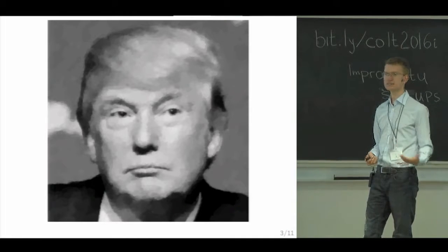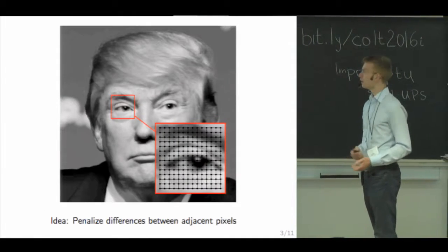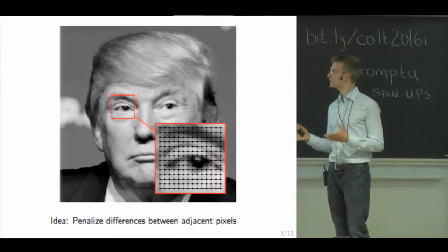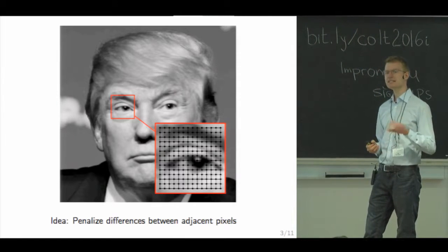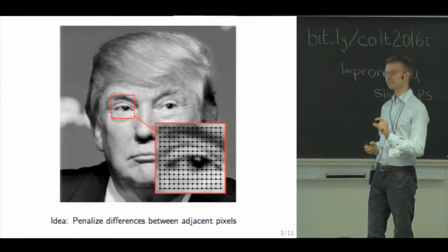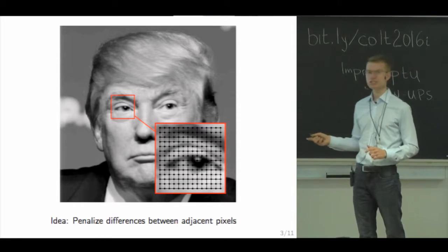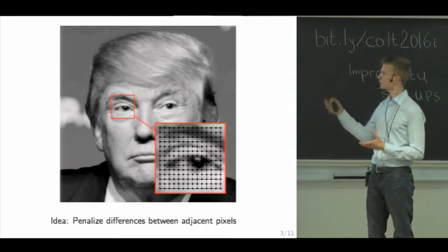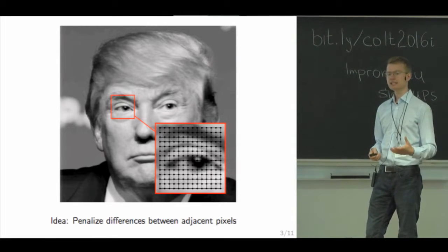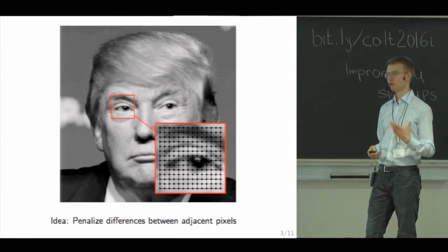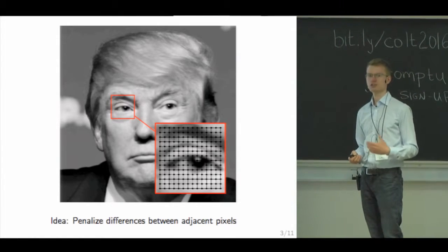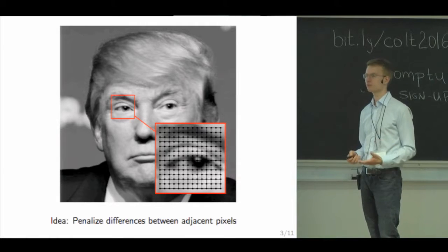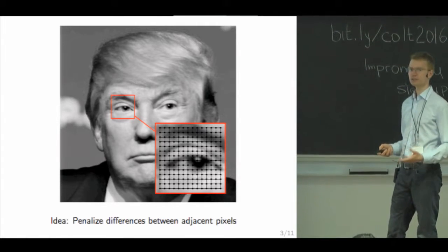You've lost some of the resolution but got rid of most of the noise. The idea is that you penalize jumps between adjacent pixels on a grid, because for natural images most adjacent pixels should behave similarly, while this is not the case for noisy images.